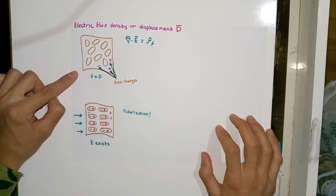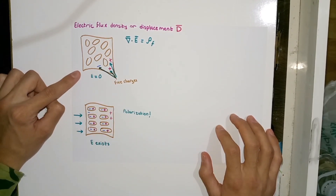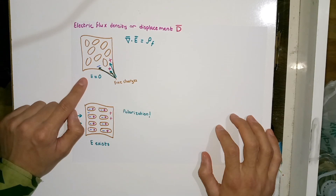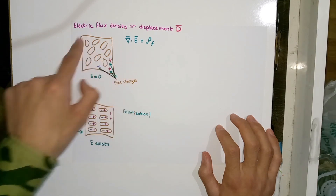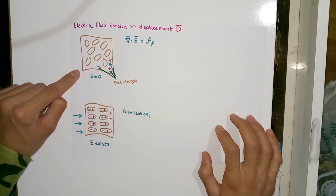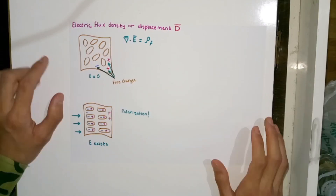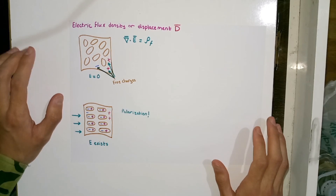Imagine that we have some dielectric in free space. This dielectric exists in free space and it does not undergo any effect from an external electric field. The electric field generated from this dielectric is equal to the charge density of the free charges inside this dielectric. The majority of charges inside dielectrics are bound by molecules.